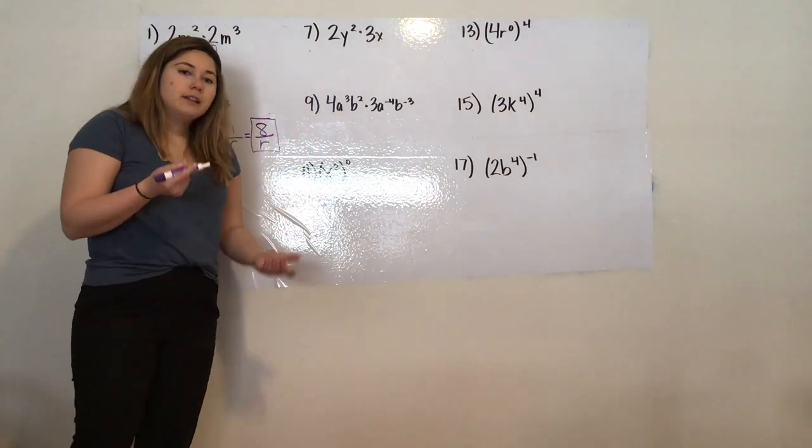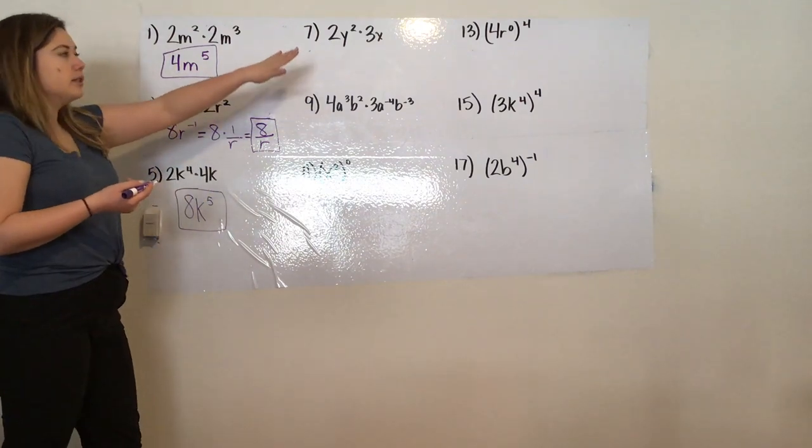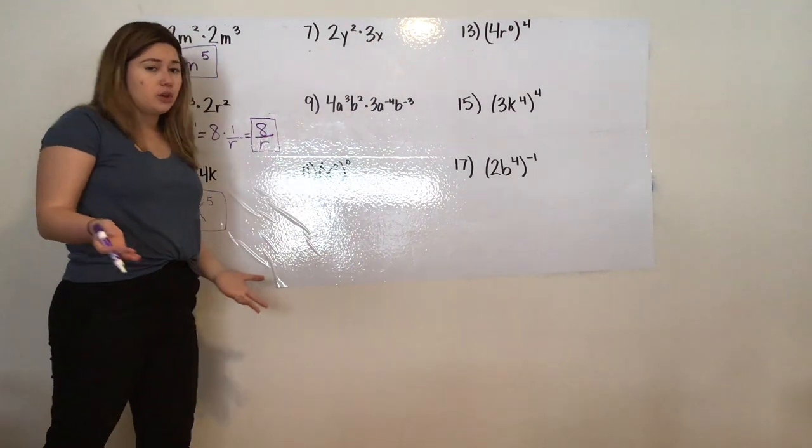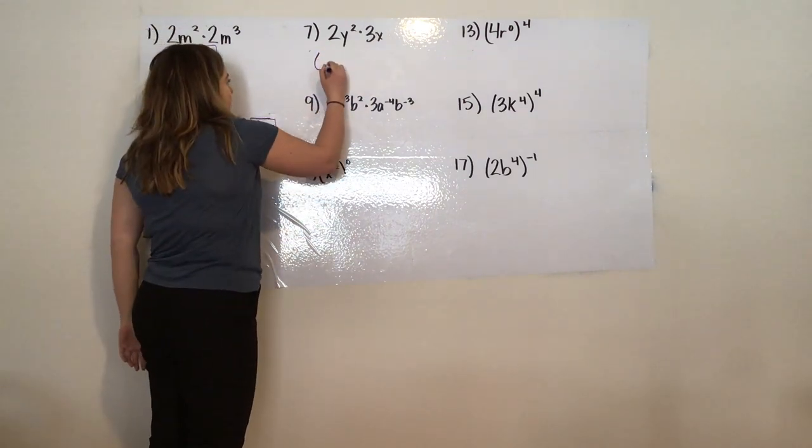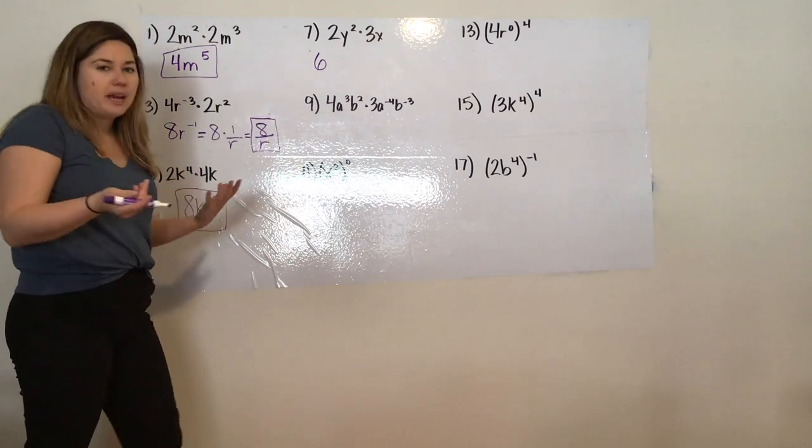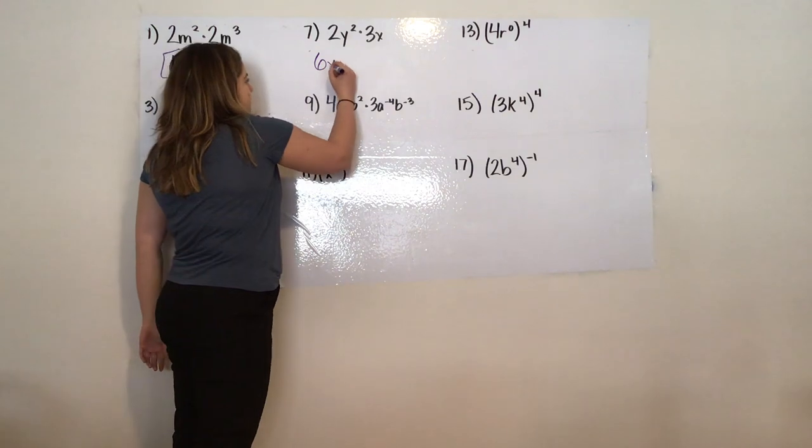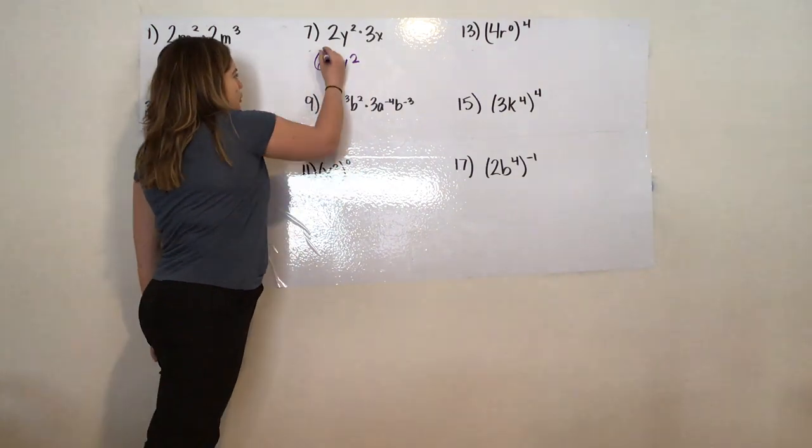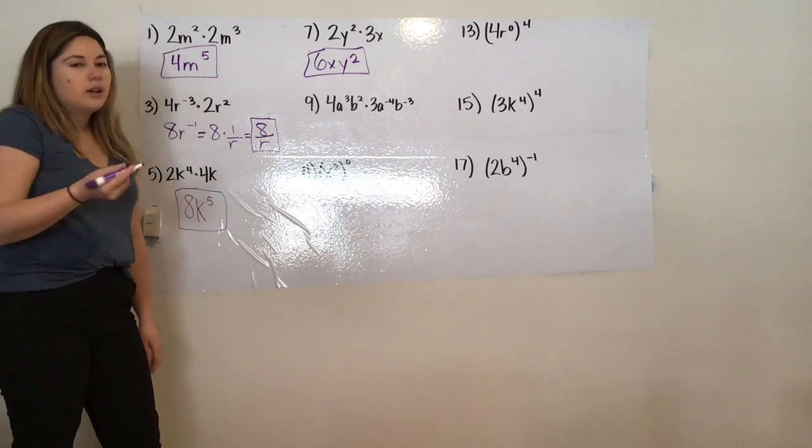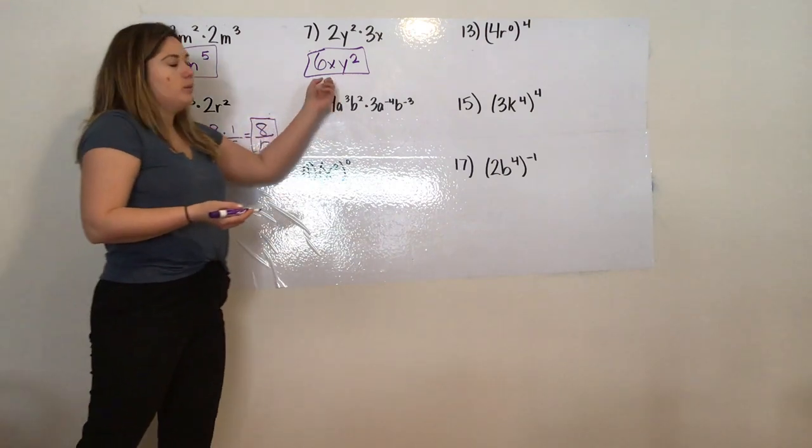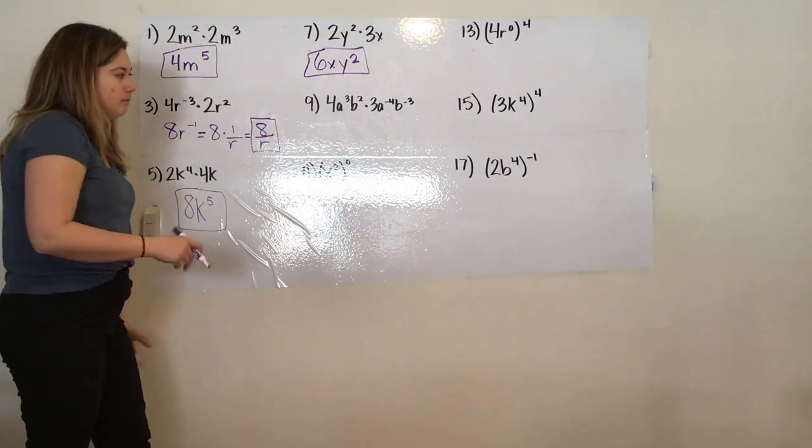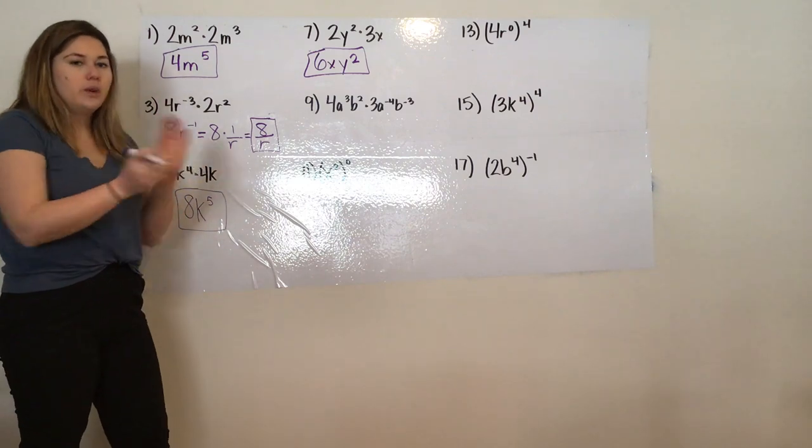Now for 7, same thing. We're only going to worry about the numbers because if you notice, we can't really do anything with the variables because they don't have the same base. So I'm going to have 3 times 2, which is 6. Mathematicians like to write it in alphabetical order, so you're going to see it written as 6xy squared. It doesn't matter if you put y squared first, but you're going to see it in alphabetical order. Of course, as a commutative property, we can change that order.